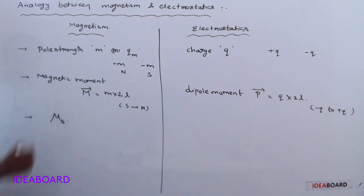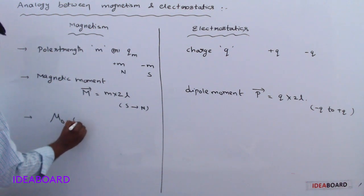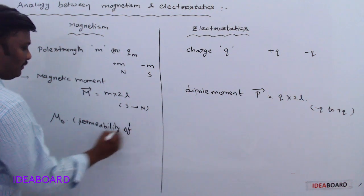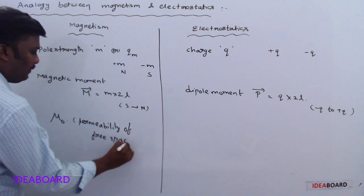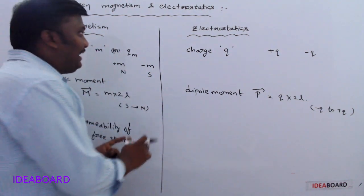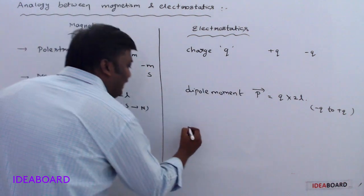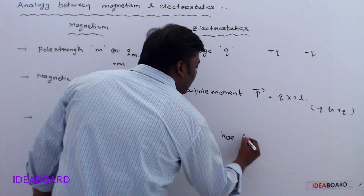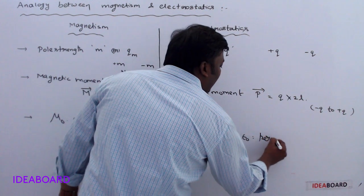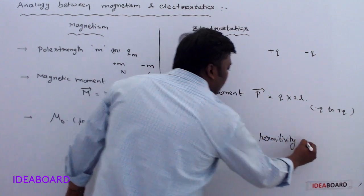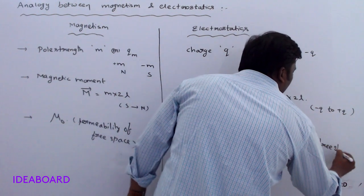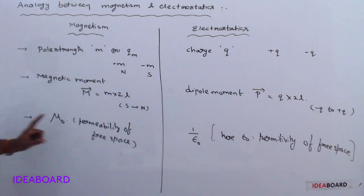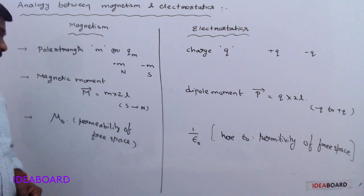In magnetism we use the symbol μ₀, called permeability of free space. This is analogous to 1/ε₀ in electrostatics, where ε₀ is the permittivity of free space. So μ₀ corresponds to permeability and ε₀ corresponds to permittivity of free space.